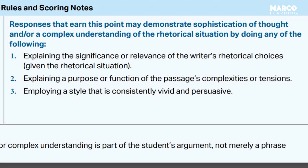You can also earn it by explaining a purpose or function of the passage's complexities or tensions. What's complexity? What's tension? Tension is about a contradiction of some kind — the truth isn't often as simple as black and white. When a writer is making a rhetorical choice, sometimes that writer is shifting between one audience and another, or for one purpose and a secondary purpose. Sometimes authors seem to almost contradict themselves — they want to look forward to the future and progress, but also look back to tradition. If you can show that complexity, that tension, you can earn the sophistication point.